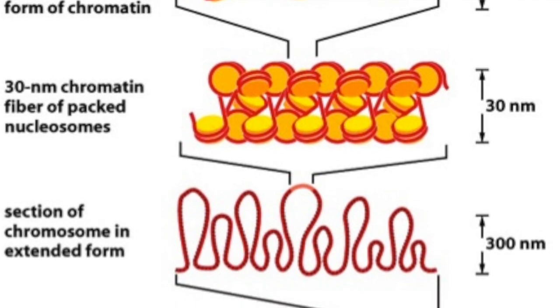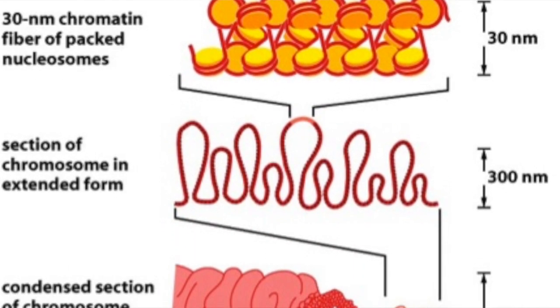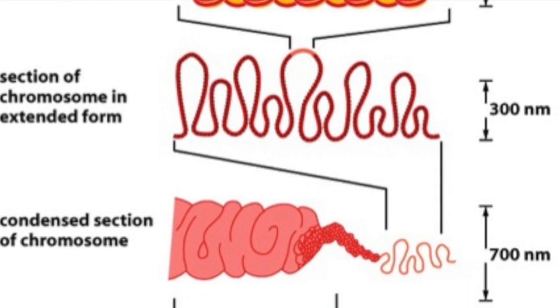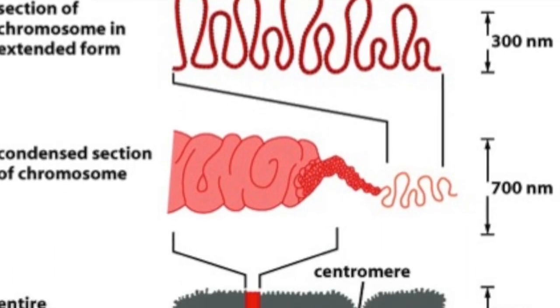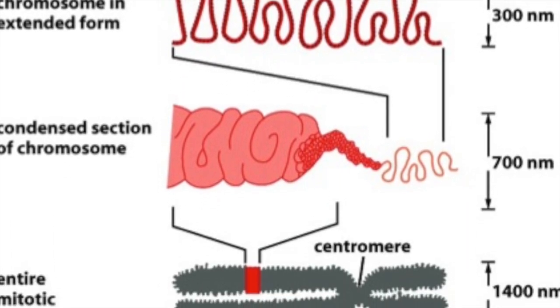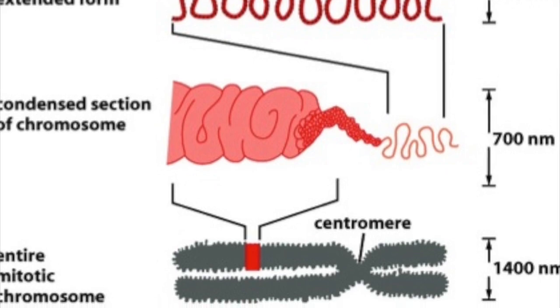Chromatin fibers are super-condensed to form chromosomes when undergoing cell division. The darkest area inside the nucleus is the nucleolus, in which the small and large subunits of the ribosome are synthesized, as well as certain RNA processing.